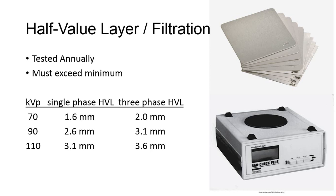A combination of aluminum filters should be used as absorbers with the same technical factors to reduce the beam to 50% of its original value at the ion chamber. Once that's accomplished, the thickness of the absorber should be added up to determine the actual HVL. There are minimum required aluminum equivalent standards at different KVP ranges and with different generators. To pass the test, the HVL must be greater than the minimum listed, and this should be tested annually.